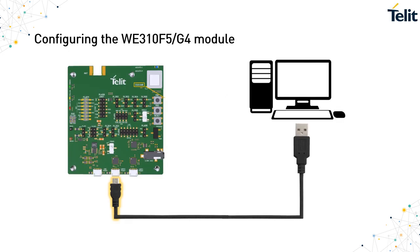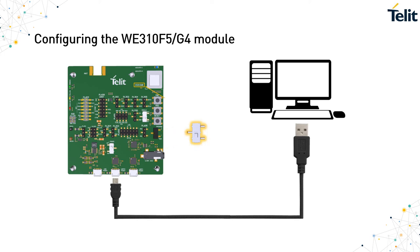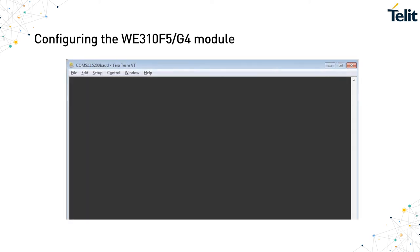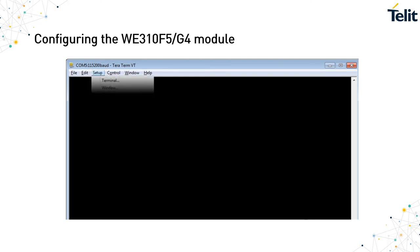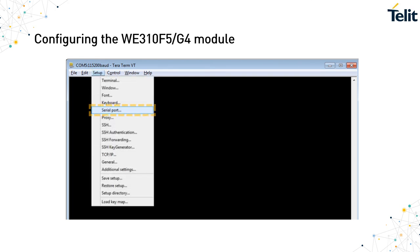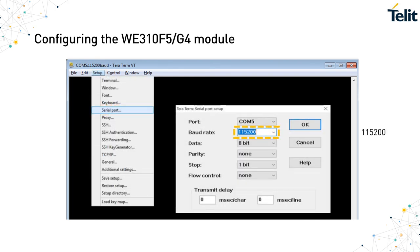To configure the evaluation board, connect the micro-USB cable to the UART0 port. Change the toggle switch position to Run. Use the power toggle switch to reset the evaluation board. Open TeraTerm, click Setup and Serial Port, then set the baud rate and click OK to save the configuration.